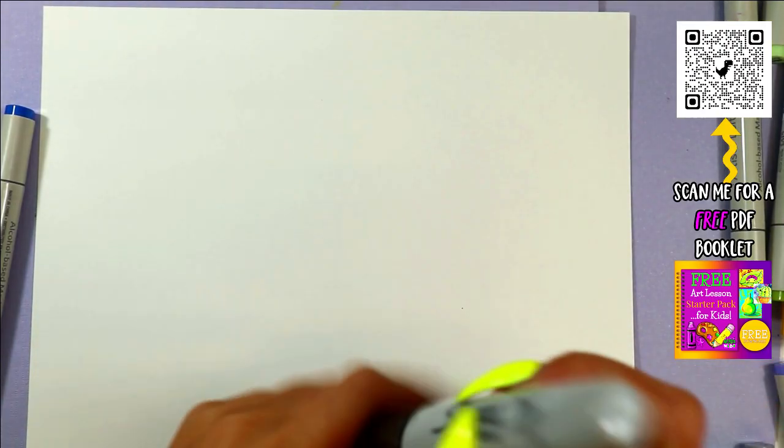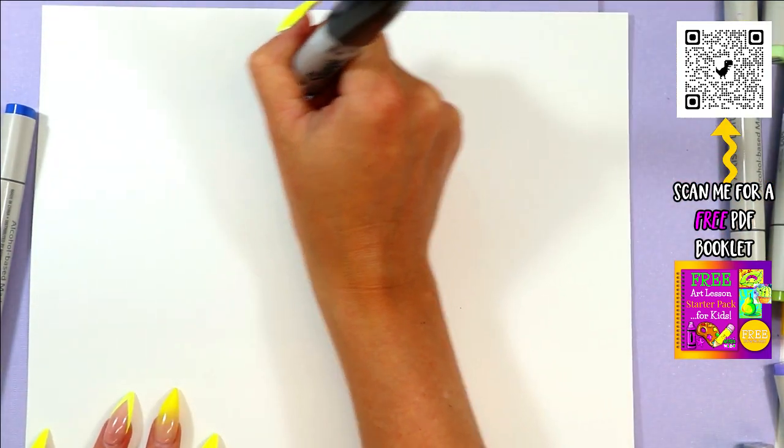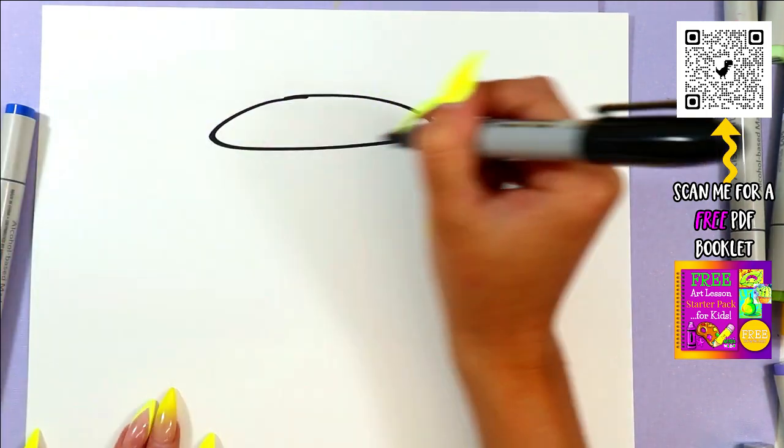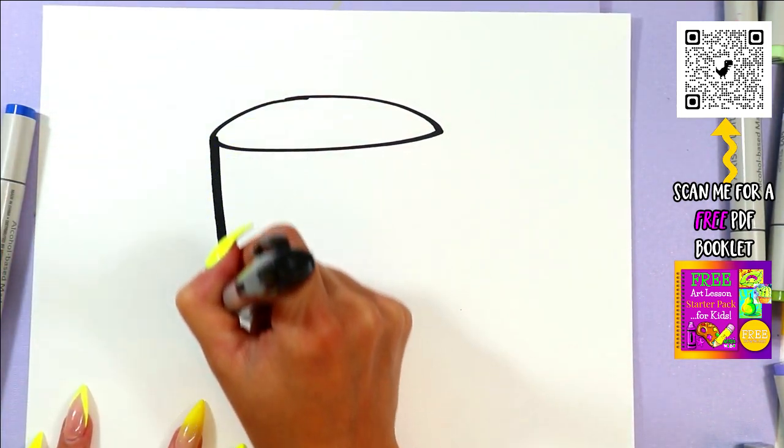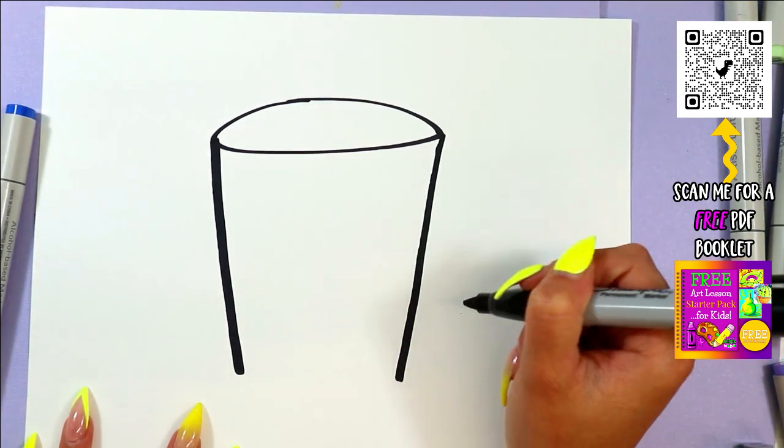Alright welcome back, today is day 27, we are going to be doing some lemonade and we're gonna get right into it. If you're just joining me, this is the June Dine Bonanza where I have been drawing every single day for the last 30 days.